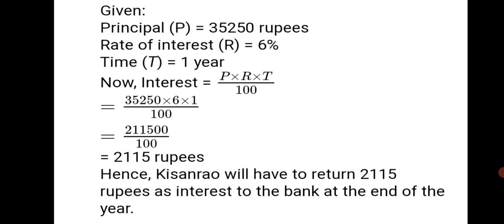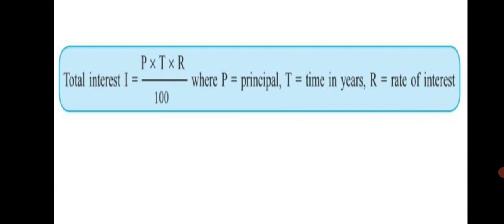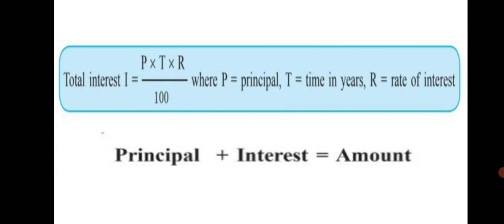Do learn the two formulas well if you are using Method 2. The formulas to remember are: Interest equals P into T into R upon 100, where P equals principal, T equals time in years, R equals rate of interest. The second formula is: Amount equals Principal plus Interest. With these formulas you can solve Practice Set 35 and Chapter 14 on Banks and Simple Interest. We have now completed the chapter and practice set — do practice the sums well in your notebook. Stay safe, keep learning, and thank you.